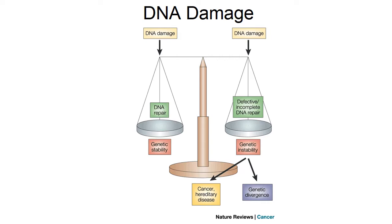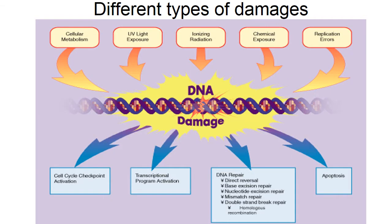DNA damage is of two types: one is repairable and another is defective or incomplete repair. If DNA damage is repaired, it will be genetically stable. If not, defective or incomplete repair leads to genetic instability. Because of that instability, two types of problems may arise: one is cancer, a hereditary disease, and another is genetic divergence. Genetic divergence may cause problems but is also helpful to plants for directed evolution.